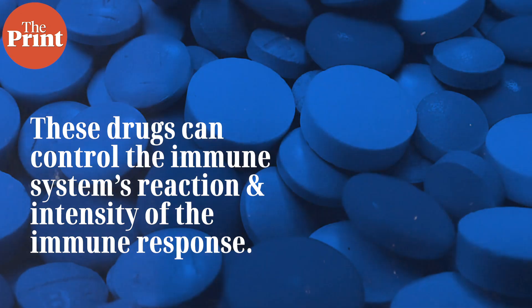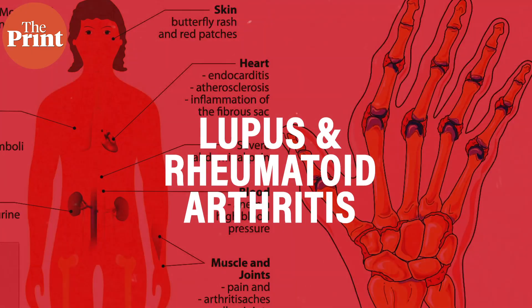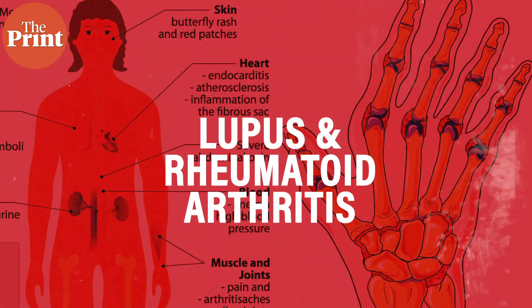The most common way to control cytokine storms is by using steroids or immunomodulatory drugs — drugs that, as the name suggests, can control the immune system's reaction and intensity. Such drugs are commonly used to treat autoimmune diseases, where the immune system misidentifies the body's own cells as a foreign pathogen and mounts an immune response against them.